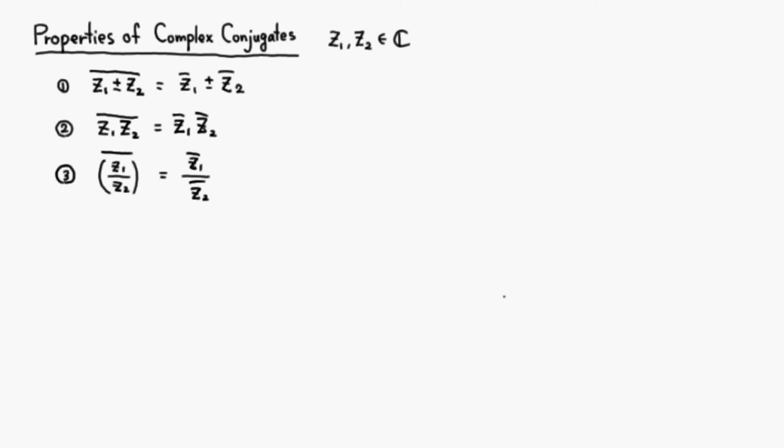Let's look at some properties of complex conjugates. First, if you take the conjugate of a summation or difference, you can just take the conjugate of each term, then carry out the addition and subtraction later.